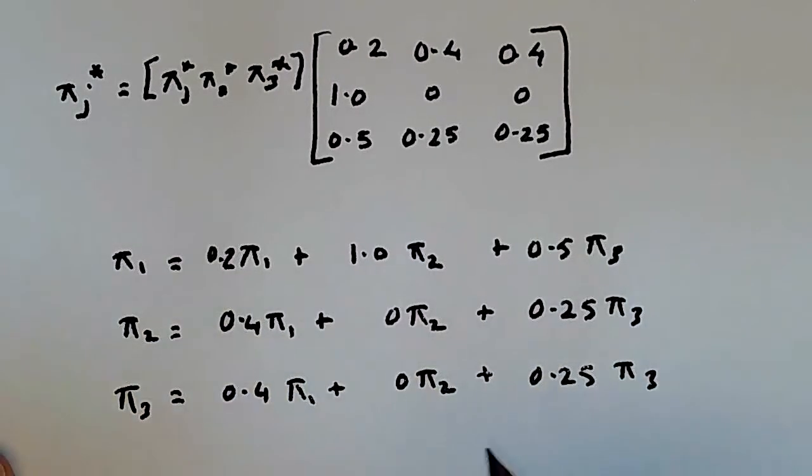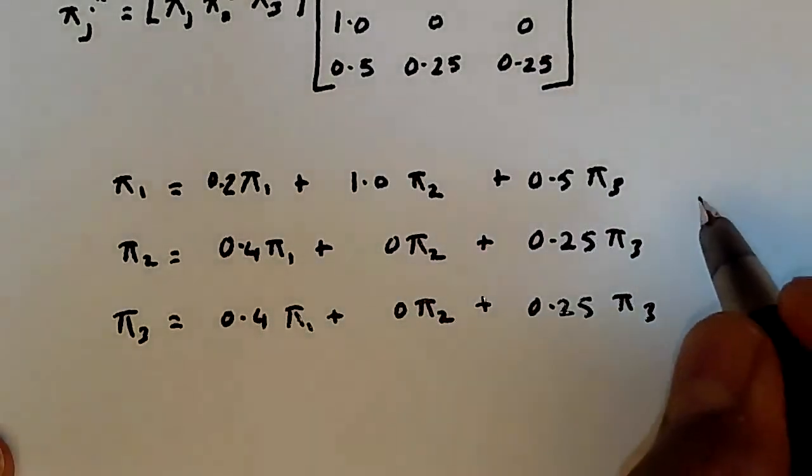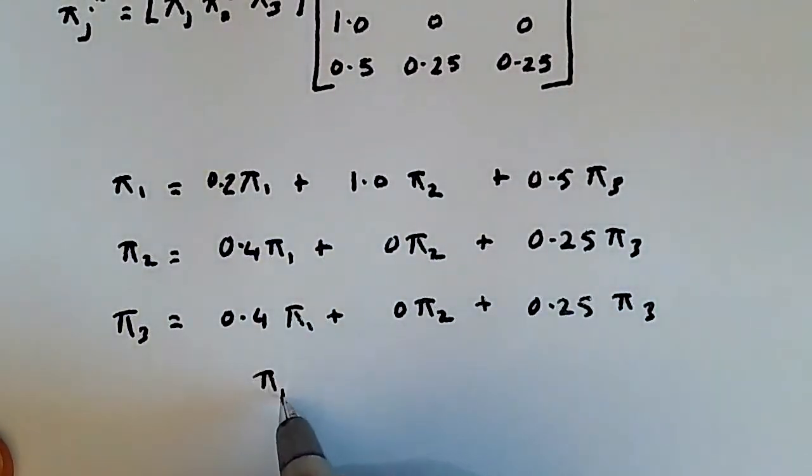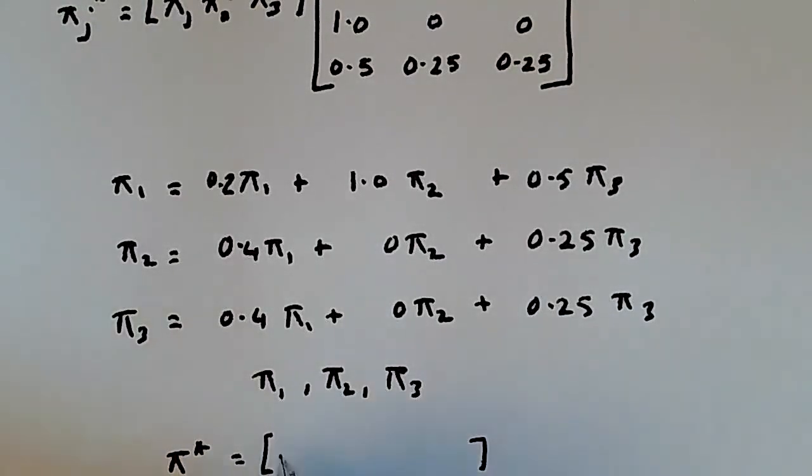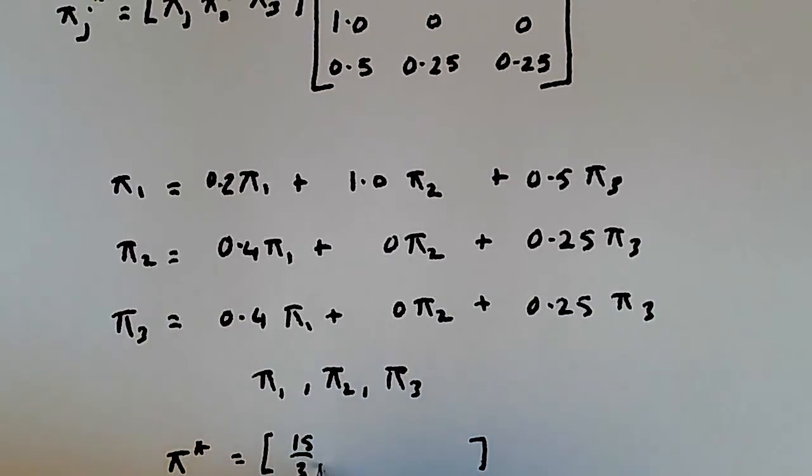So this is clearly a system of three equations in three unknowns, which are Pi 1, Pi 2, and Pi 3. And if you solve for these three unknowns, you will in fact get the value of Pi star, which is going to be given by the solution. And that happens to be, I happen to have the solution in my pocket, which I'll tell you, which is 15 by 31, 8 by 31, and 8 by 31.